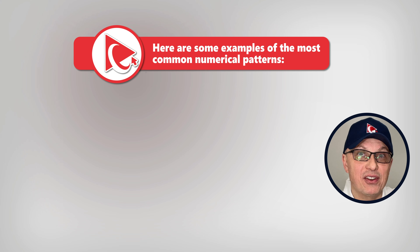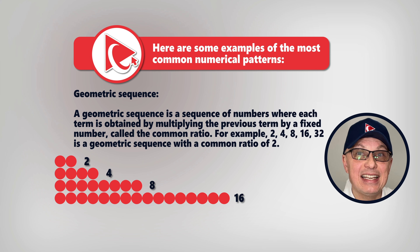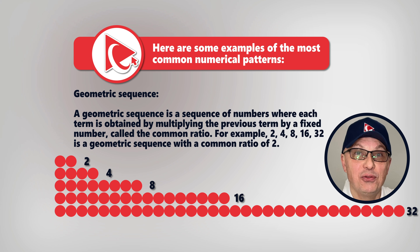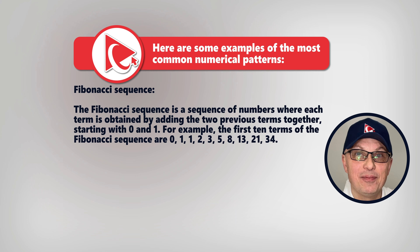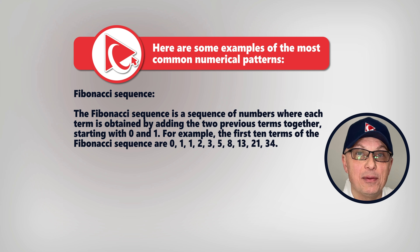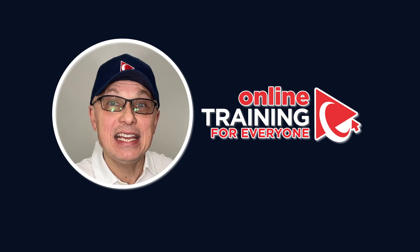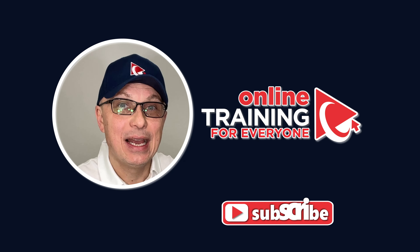A geometric sequence is one where each term is obtained by multiplying the previous term by a fixed common ratio. For example, 2, 4, 8, 16, and 32 is a geometric sequence with a common ratio of 2. Last on my list is the Fibonacci sequence, where each term is obtained by adding the two previous terms, starting with 0. The first 10 terms are 0, 1, 1, 2, 3, 5, 8, 13, 21, and 34. Do you know any other interesting numerical patterns? Please post in comments.